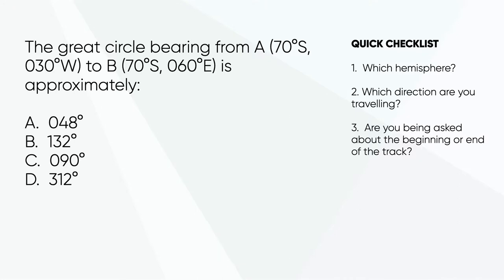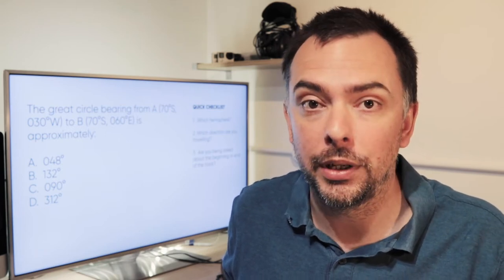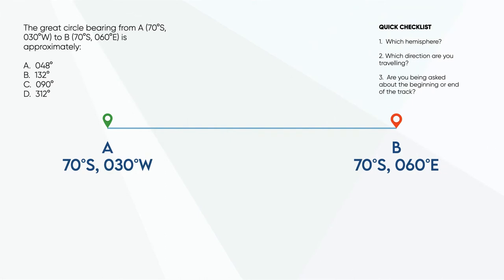This exam question says: the great circle bearing from A, 70 south, 30 west, to B, 70 south, 60 east, is approximately? The first thing that we'll do is go through the checklist. Which hemisphere are we in? We're in the Southern Hemisphere, which means the quick sketch that we can draw puts the great circle track below our rhumb line track. Secondly, which direction are you travelling? You're going from A in the west to B in the east, so you're travelling eastbound. And thirdly, are you being asked about the beginning of the track or the end of the track? It says from A to B — so we're starting at position A, and it wants us to know in which direction we should be going to follow the great circle track.